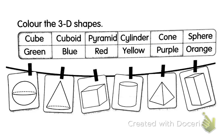Look at this picture. Color the 3D shapes. First, cube. Cube is green. So which one is cube? Cube is most likely like a dice. Yes, this one is cube. So we color it in green.